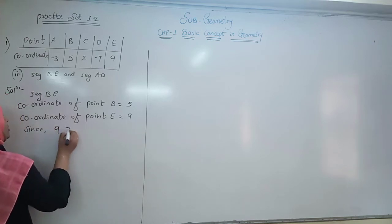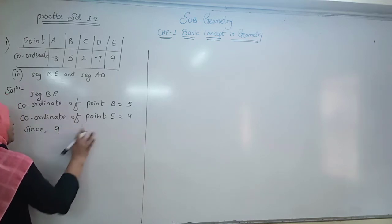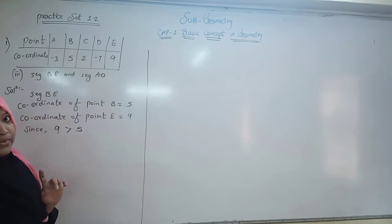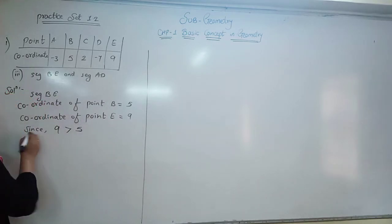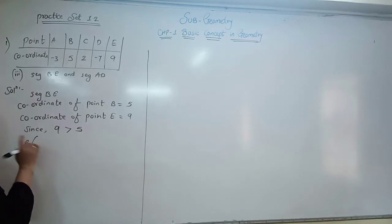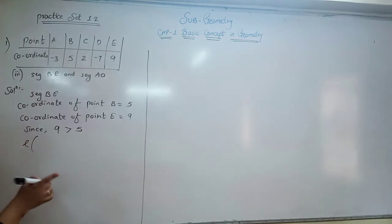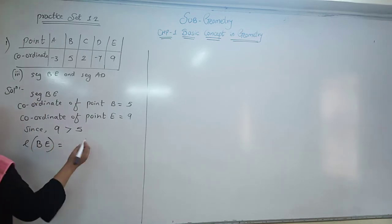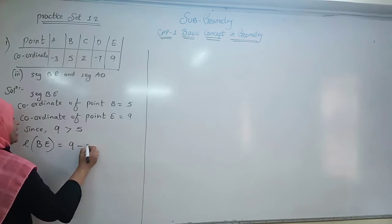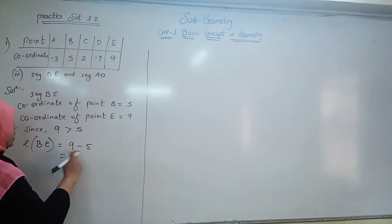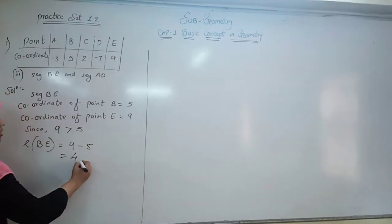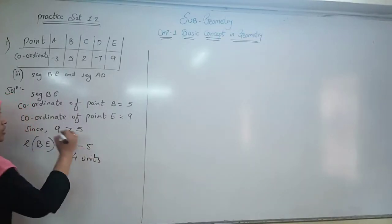Since 9 is bigger than 5, we find the length of BE: bigger number minus smaller number, so 9 minus 5. That equals 4 units.